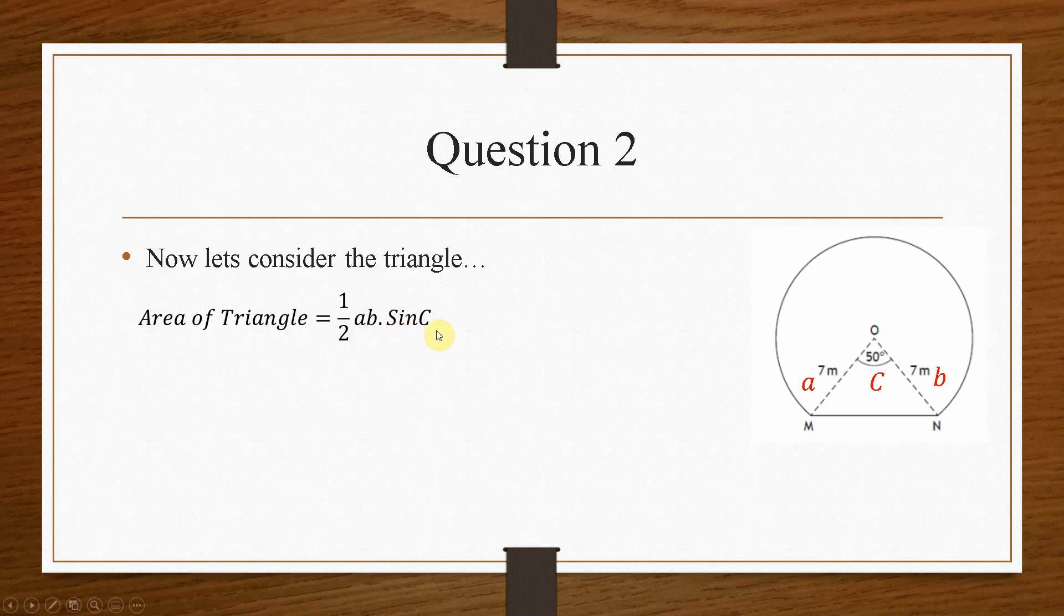So long as we remember that the small letters represent the length, and the capital letters represent the angle. So we know that A and B are going to be 7, and that capital C is the angle, which is going to be 50. So if we pop them in, then we end up with a value of 18.76 meters squared.